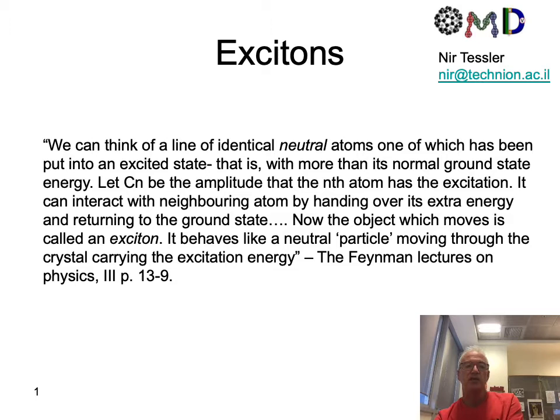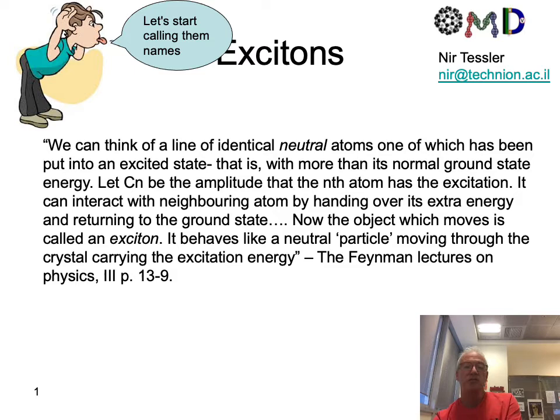Last time at the end of the lecture we briefly mentioned this thing called the exciton, and I prefer the definition found in the Feynman lectures on physics: it is an excited state which is neutral and its energy can move. What we'll do today is start by classifying different types of excitons — or if you like, we'll start by calling them names so we know what we are dealing with.